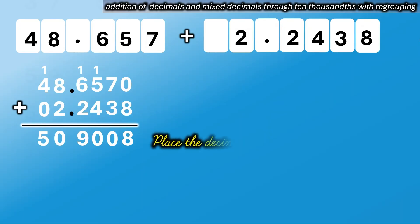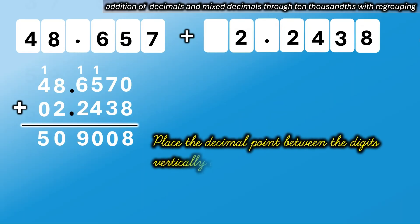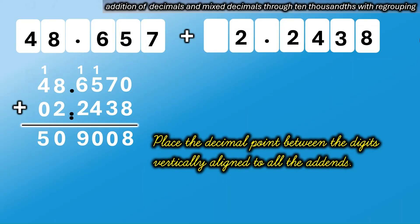Last step: place the decimal point between the digits, vertically aligned to all the addends. We have the sum: 50 and 9,080 ten-thousandths.